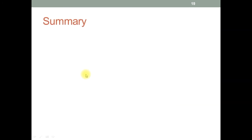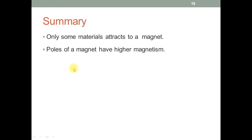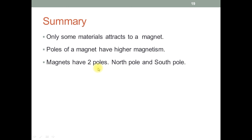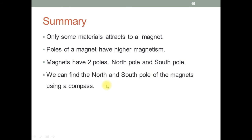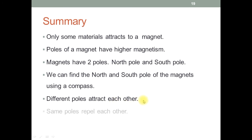This is the summary of Unit 7. In this unit we studied that only some materials are attracted to a magnet. Poles of a magnet have higher magnetism. Magnets have two poles: North pole and South pole. We can find the North and South pole of a magnet using a compass. Different poles attract each other, and same poles repel each other.